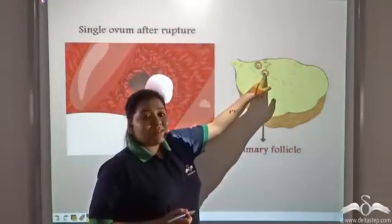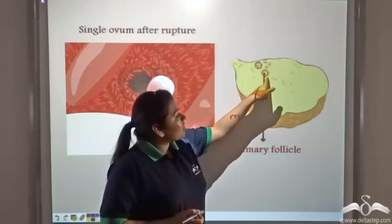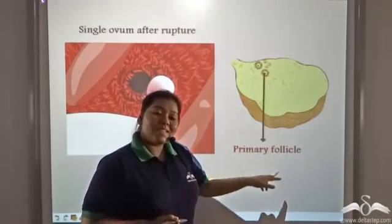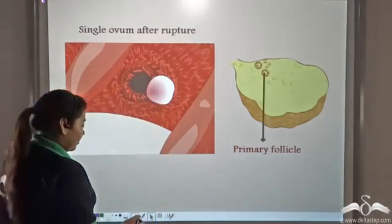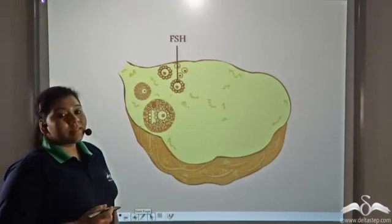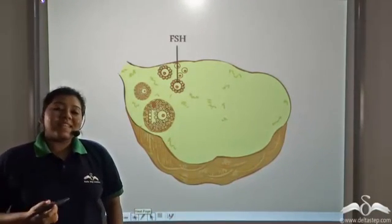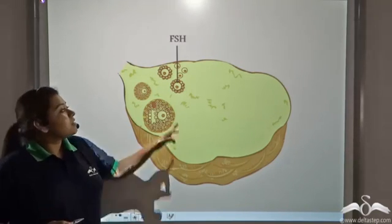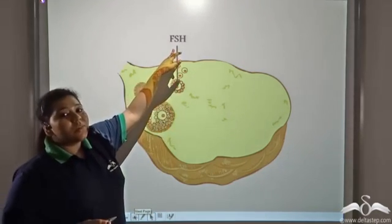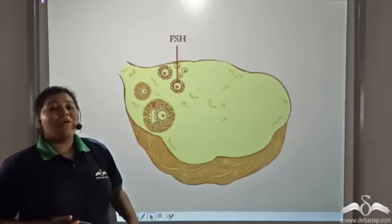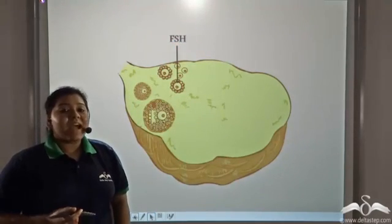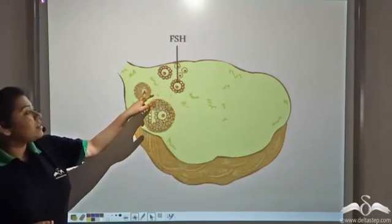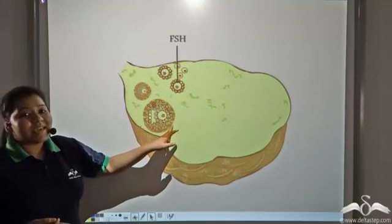The ovum is enclosed in bag-like structures known as follicles, and these are known as primary follicles. Nature selects one such primary follicle, and under the secretion and control of follicle-stimulating hormone — a hormone secreted by the anterior lobe of the pituitary gland — the primary follicle grows into a secondary follicle.